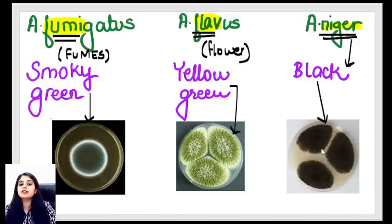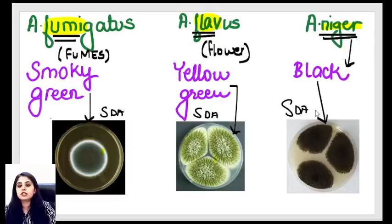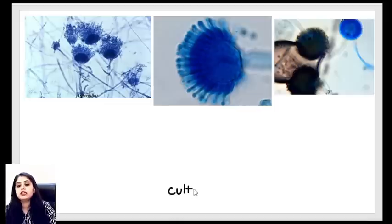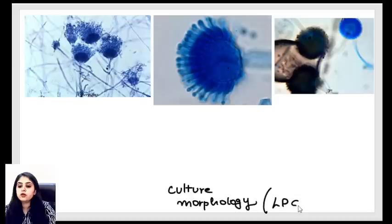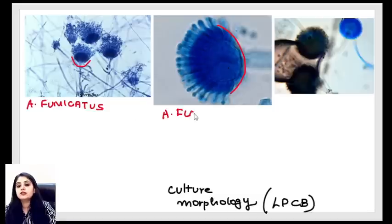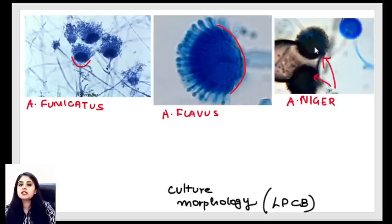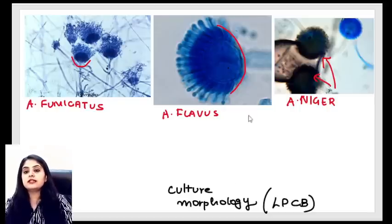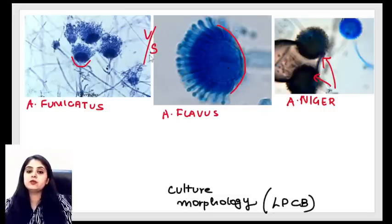Question: Vitreous aspirate from metastatic endophthalmitis shows gram-positive round to oval cells 2–4 microns in size with pseudohyphae on gram staining. Most likely etiological agent — answer is Candida albicans. Candida shows two forms: budding form (tiny round buds) and pseudohyphae form (elongated buds forming chains that look like hyphae but aren't true hyphae). Pseudohyphae with gram-positive history = Candida albicans.